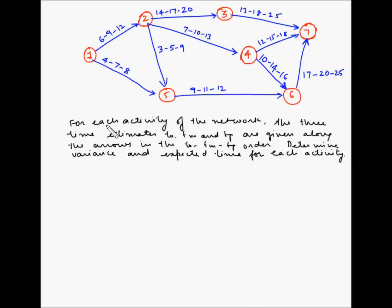In this example, we have been given a project network diagram. The activities are shown in blue color while the events are shown in red color. For each activity of the network, the project manager has arrived at three estimates: to, which is the optimistic time; tm, which is the most likely time; and tp, which is the pessimistic time. These three time estimates are given along the arrows in the to, tm, tp order.